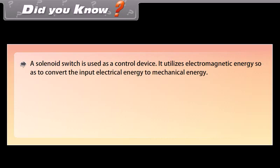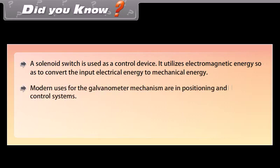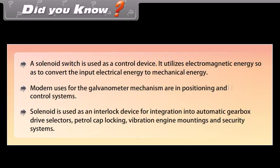Did you know? A solenoid switch is used as a control device — it utilizes electromagnetic energy to convert electrical energy to mechanical energy. Modern uses for the galvanometer mechanism include positioning and control systems. Solenoids are also used as interlock devices for automatic gearbox drive selectors, petrol cap locking, vibration engine mountings, and security systems.